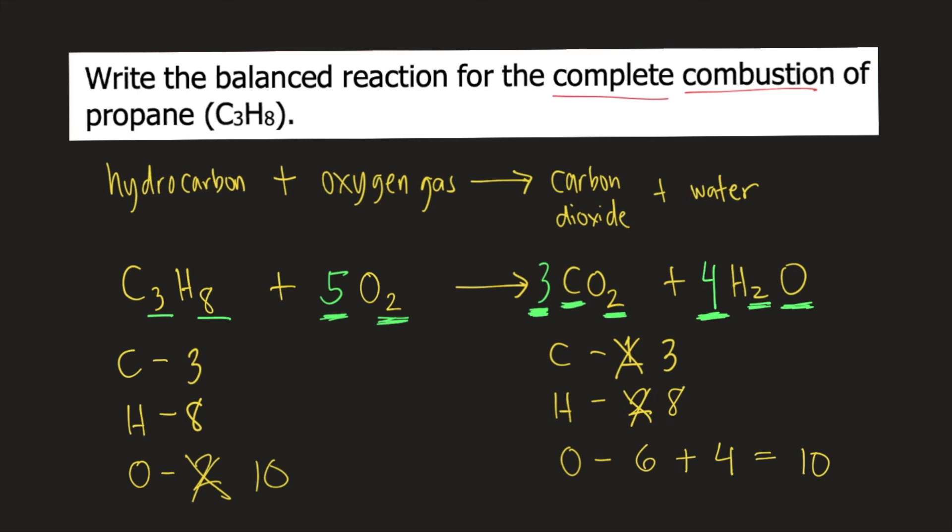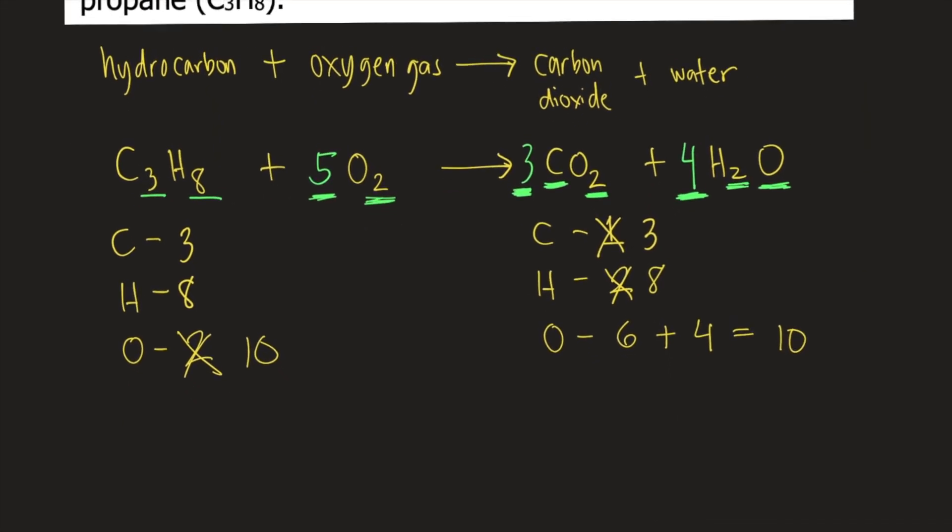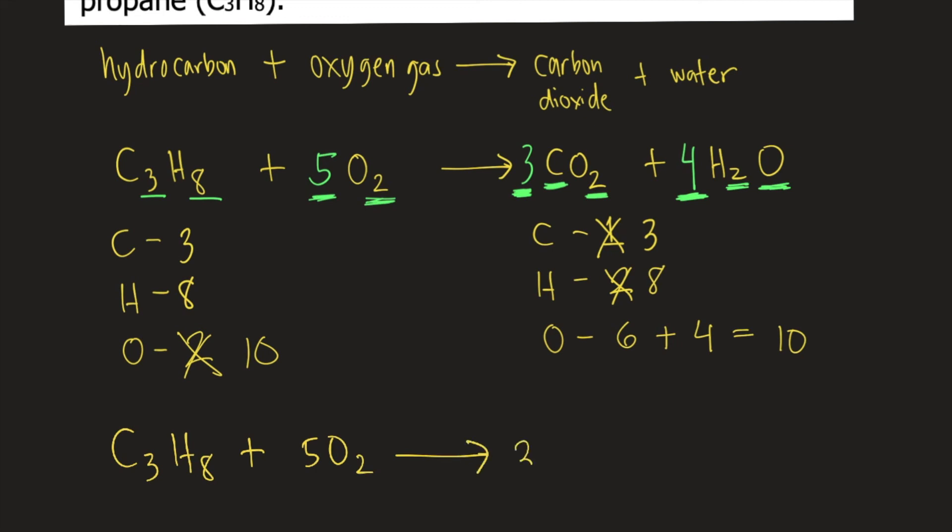So now that all the elements are balanced, the equation is already balanced. Therefore, the answer to this question is C3H8 plus 5O2. The products are 3CO2 plus 4H2O. This is the balanced, complete combustion reaction of propane.